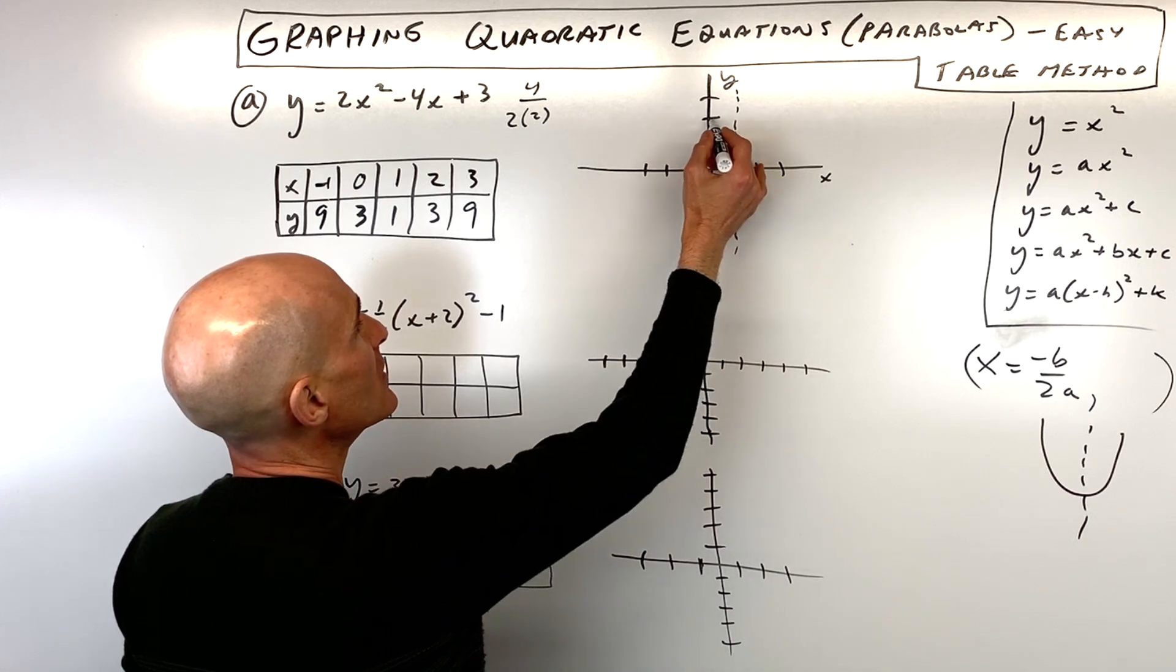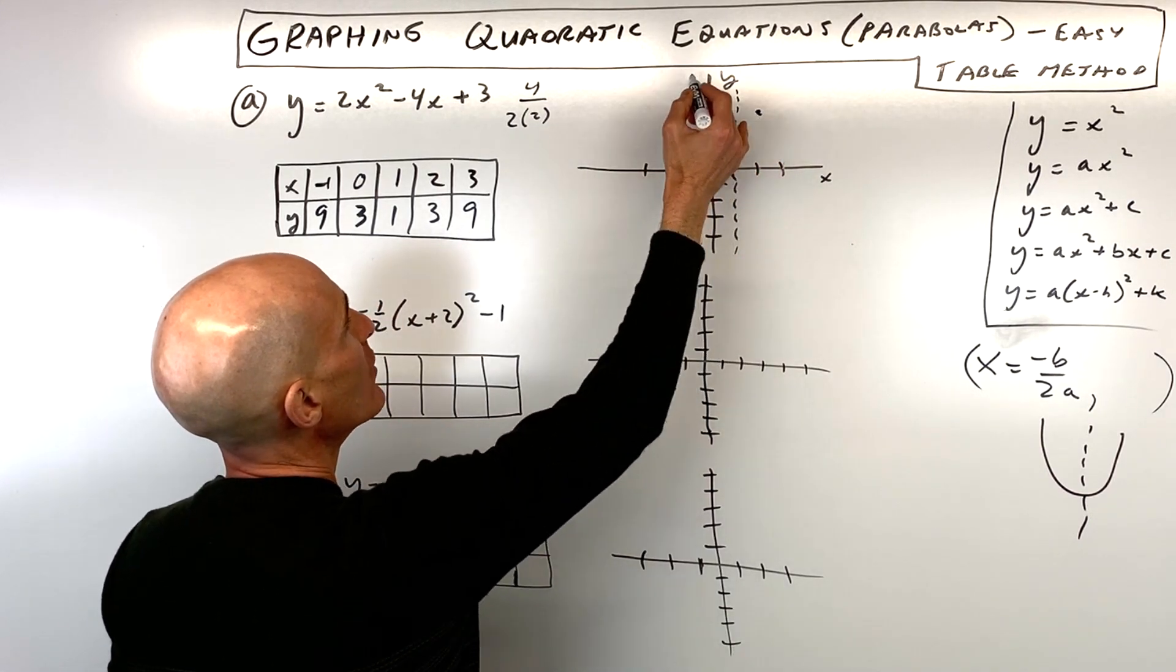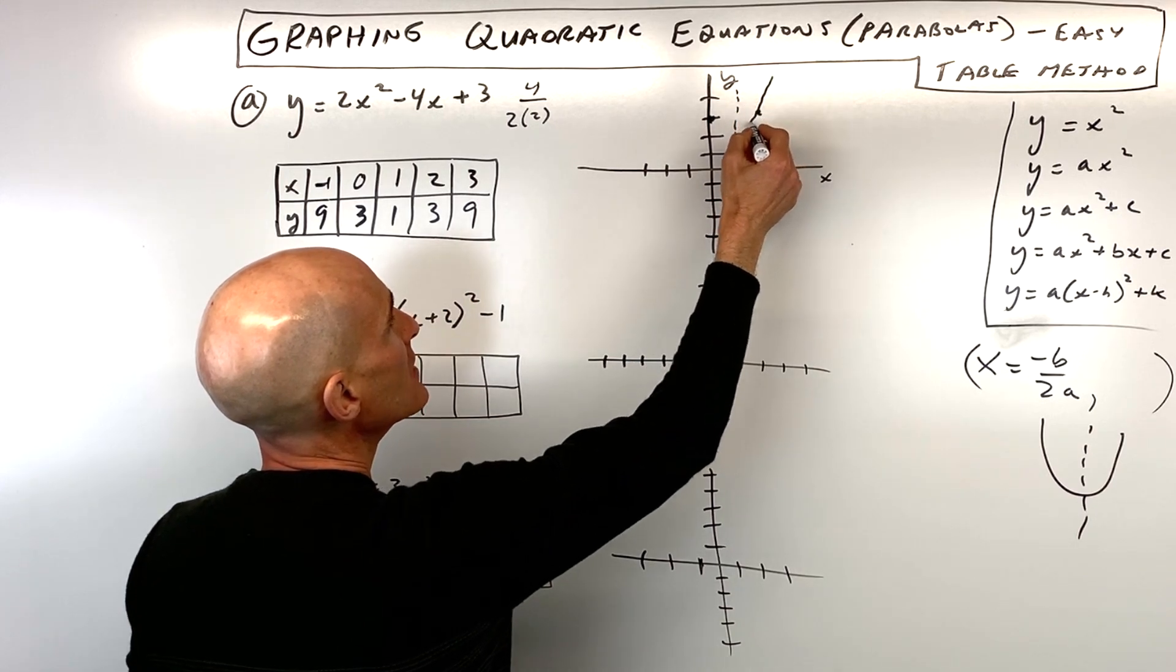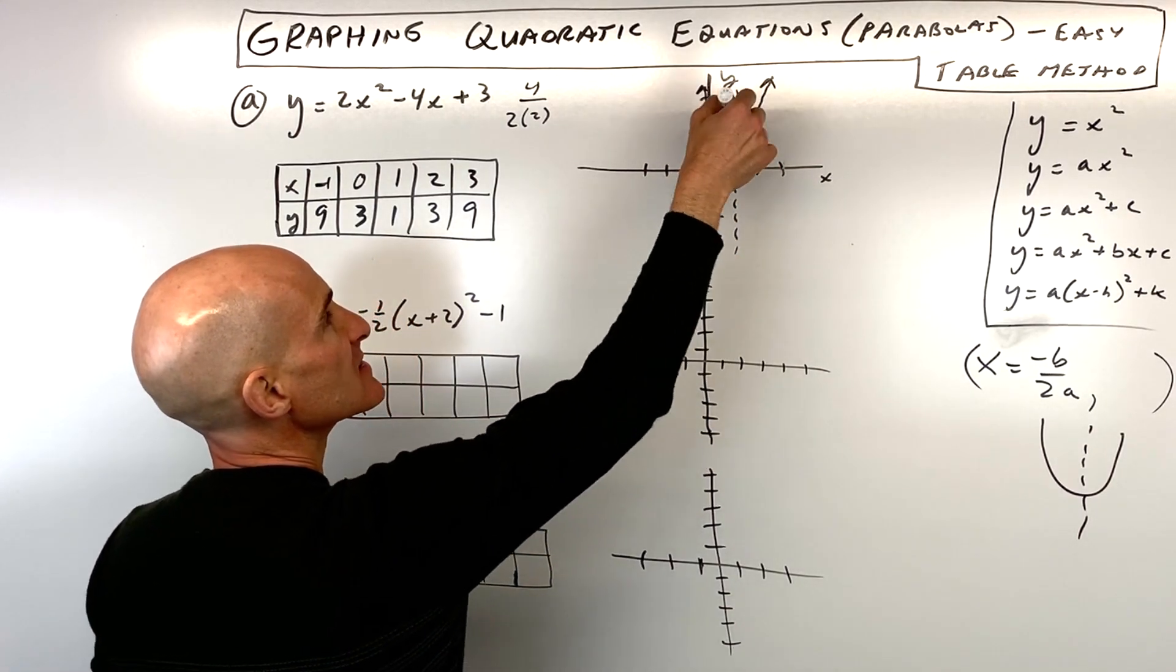So we have a (0, 3). And this one's also over here at 3. And then I could do negative 1, 9. It's kind of going off my graph a little bit. So let's just go with these three points right there. And we've got a pretty good sketch of our parabola.